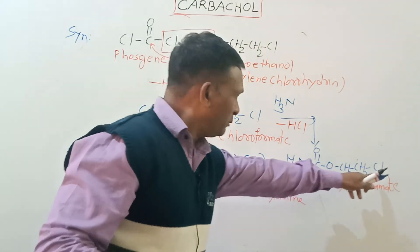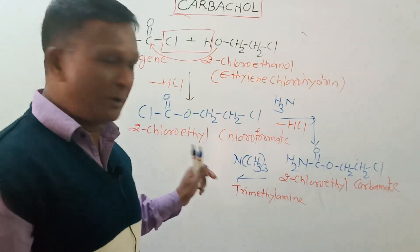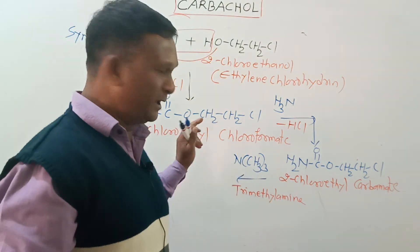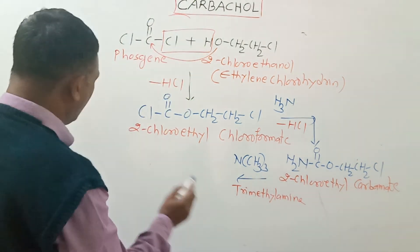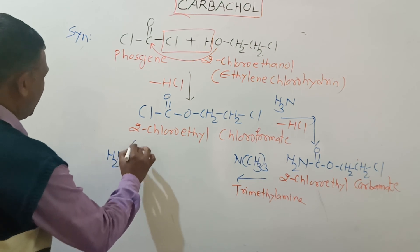There is liberation of chloride ion from here, which will remain in contact with the quaternary nitrogen through the ionic bond. So ultimately we get the formation of our desired product.